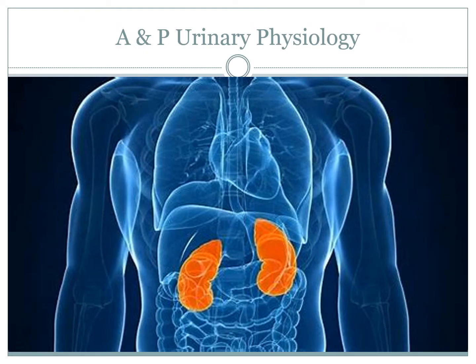Hello and welcome to another Piper pod. Today we are going to look at urinary physiology and most importantly we're going to look at the homeostatic relationship that the renal system has in controlling a lot of our balances — our blood pressure, our electrolyte balances, acid-base balances. We're going to focus a lot on the nephron itself and look at how different aspects of the body help regulate these functions.